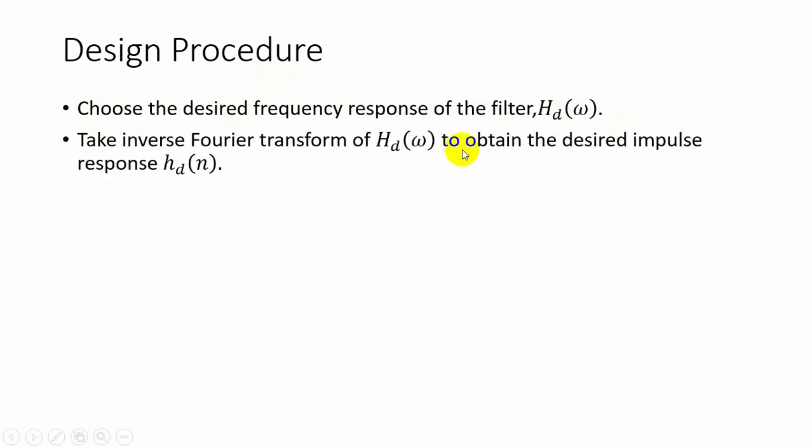Now we will see the procedure to design an FIR filter using rectangular window. First we are going to choose the desired frequency response of the filter, that is H_d of omega. Next we are going to obtain the desired impulse response from the frequency response H_d of omega by taking the inverse Fourier transform.